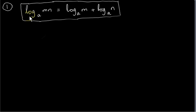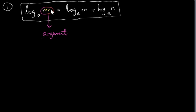The first property of the log function that we are going to look at refers to factorizing the argument of the log function. Now this thing in here is called the argument. The argument can be factorized into m times n. I just want to state the general situation. So we have log of m times n to base a — it can be broken into two log terms.